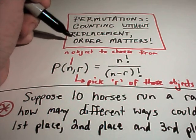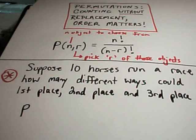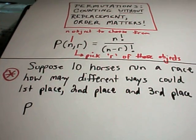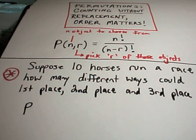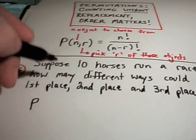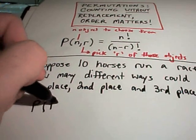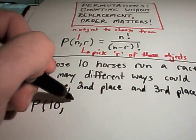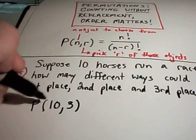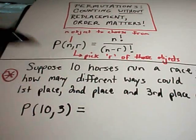And certainly here the order matters because we're saying, well, if horse A comes in first, B comes in second, C comes in third, that's going to be a different outcome as if horse B comes in first, horse C comes in second, and horse A comes in third. Okay, so I have ten total objects to choose from, there's ten horses, but I'm just interested in picking out three of those, the top three places.